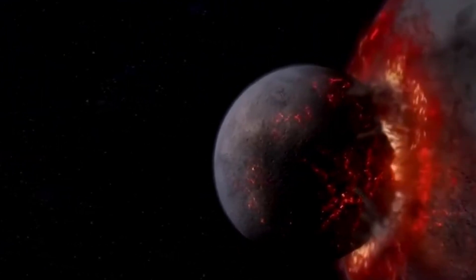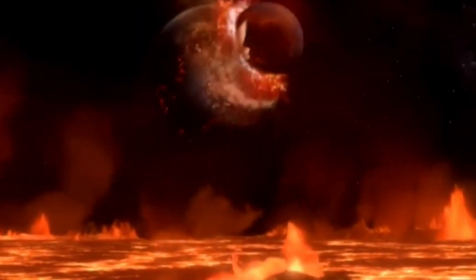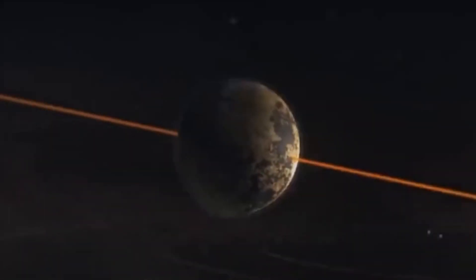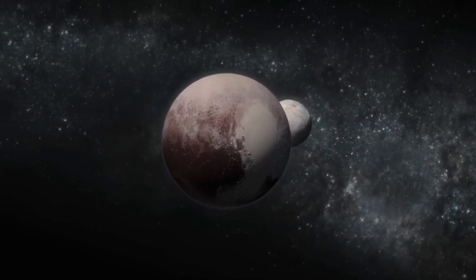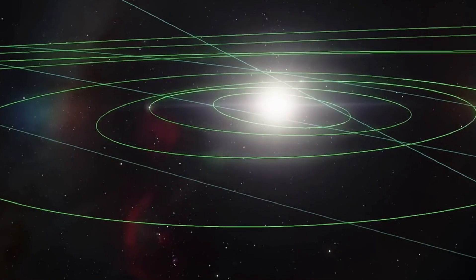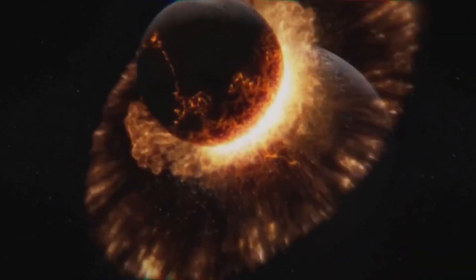Pluto's journey around the Sun is unlike any other planet in our solar system. It takes a staggering 248 years to complete a single orbit, meaning since its discovery in 1930, it hasn't even finished one full revolution. But the intrigue doesn't stop there.